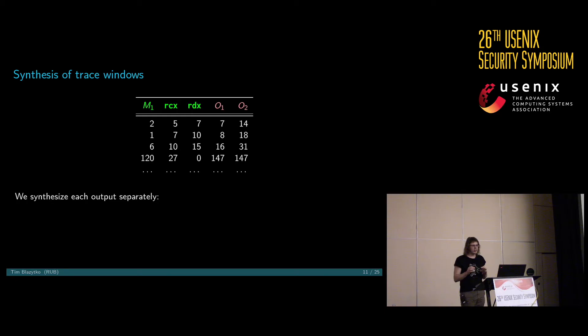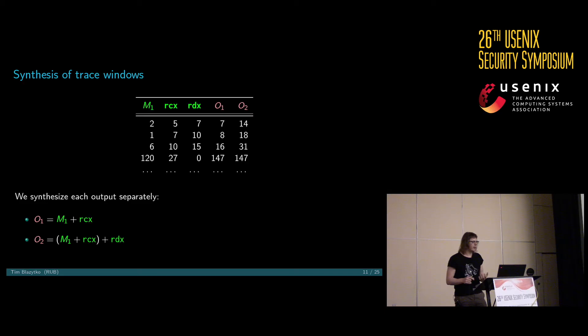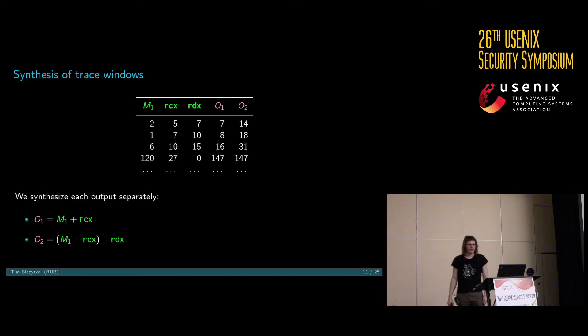Now we have our input-output pairs without looking at the code at all, and we want to synthesize the semantics. We do it for each output separately. For O1, we see we have M1 plus RCX — looking at the table, O1 is 7, and 2 plus 5 is 7, 2 plus 7 is 8. So basically this is O1. For O2, we have M1 plus RCX plus RDX. In the first line, 2 plus 5 is 7, plus 7 equals 14, and so on.